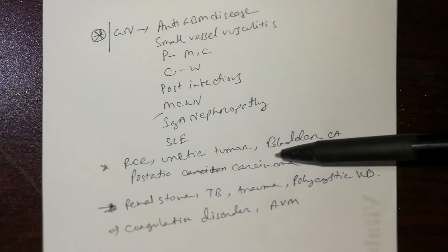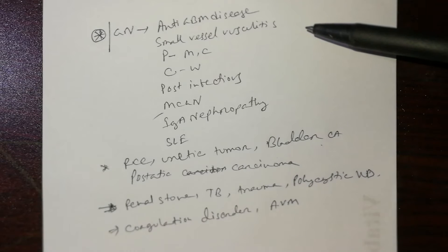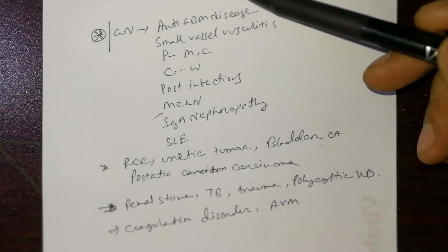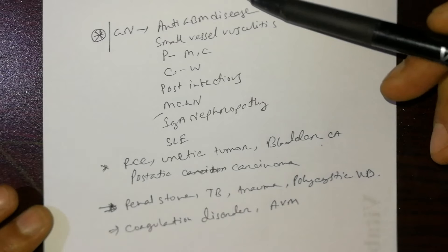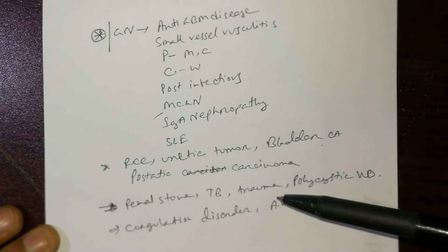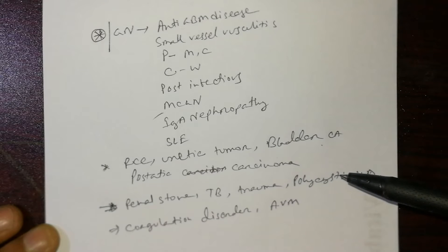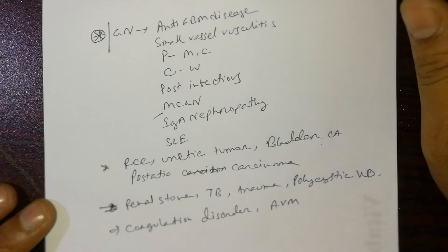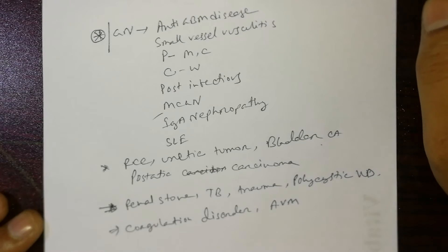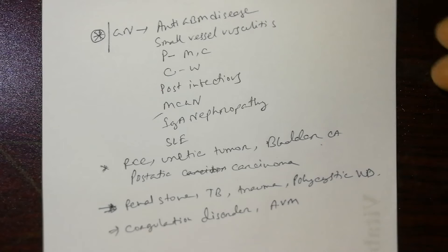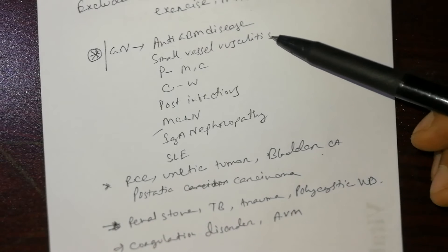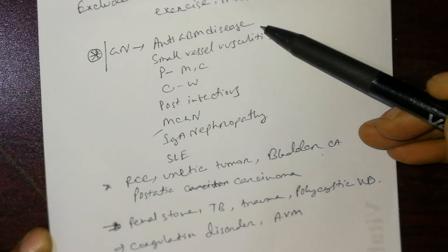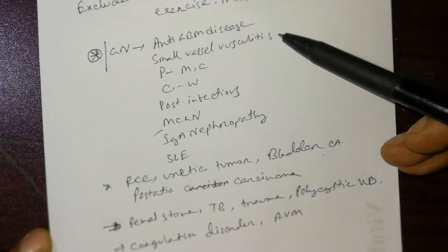Number one is glomerulonephritis, number two is carcinoma including renal cell carcinoma, ureteric tumor, bladder carcinoma, and prostatic carcinoma. Then benign causes and glomerulonephritis, followed by renal stone, TB, trauma, polycystic kidney disease, coagulation disorders, and AVM. The causes of glomerulonephritis include anti-glomerular basement membrane disease and small vessel vasculitis.